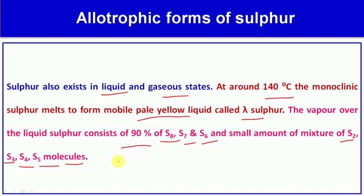In this video, we have discussed the allotrophic forms of sulfur — specifically rhombic sulfur and monoclinic sulfur as the two crystalline forms, as well as the amorphous allotrophic forms of sulfur.